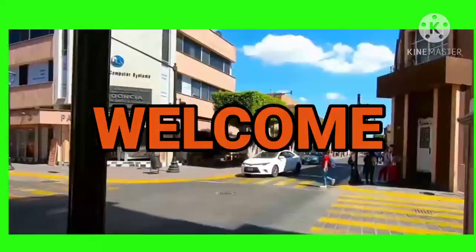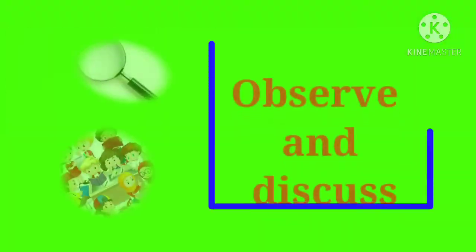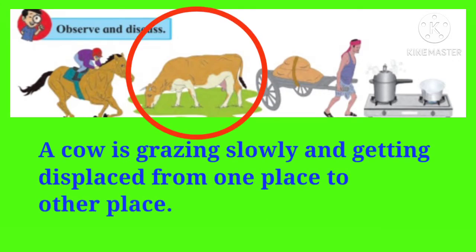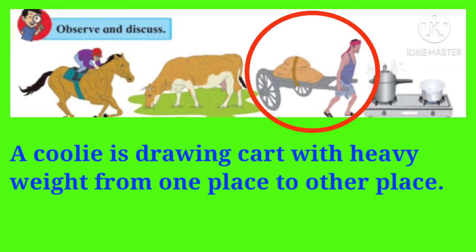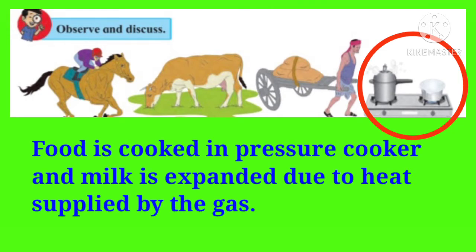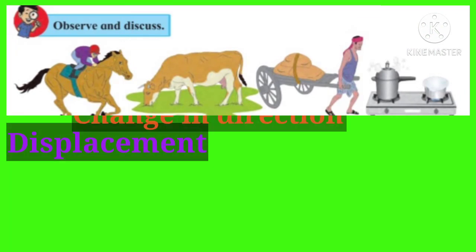Welcome back students. Let's see lesson number 7: Motion, Force and Work — observe and discuss. In the first picture we can see a horse rider riding a horse and getting displaced from one place to another with speed. In the second picture we can see a cow grazing slowly and getting displaced from one place to another. In the third picture we can see a coolie drawing a cart with heavy weight, displacing it from one place to another. In the fourth picture we can see a gas stove on which food is cooked in a pressure cooker and milk expands due to heat supplied by the gas. In all the above cases we can see that there is a displacement, a change in direction, as well as a change in shape of the objects.